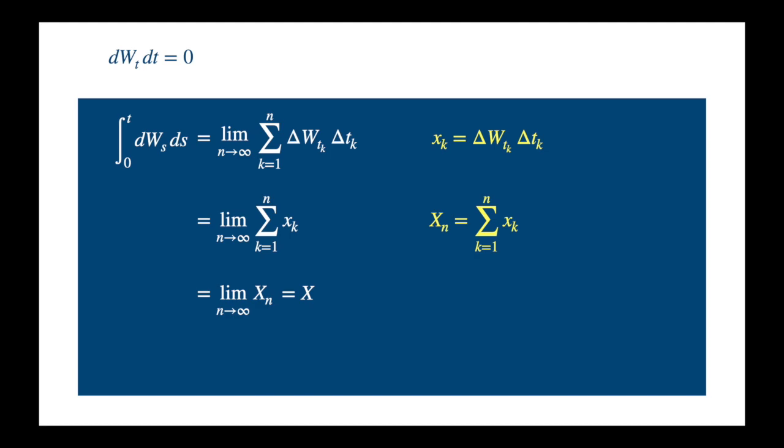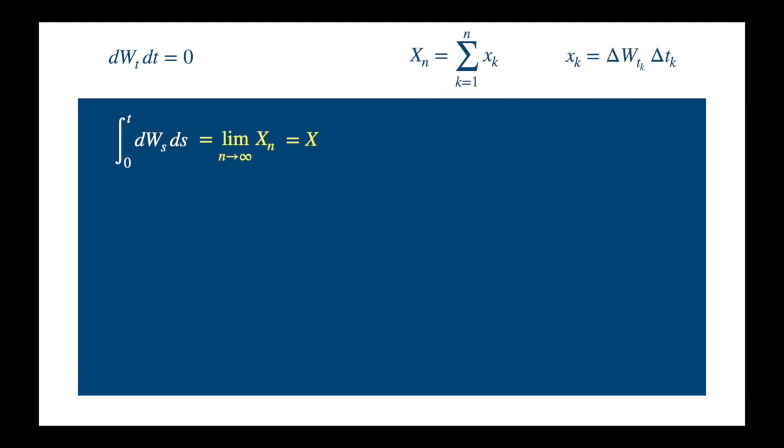Reason being, our x_k's are random variables, so there is some probability associated with them, but the limit we have doesn't contain any probability.